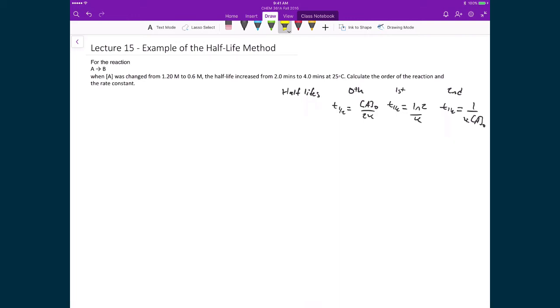The second example we're going to cover is using the half-life method to determine the order of a reaction. In this case, a reaction is just a simple reactant A that turns to product B. We change the concentration of A from 1.2 to 0.6 molar, and that increased the half-life from 2 minutes to 4 minutes at 25 degrees Celsius. So the question is, what is the order of the reaction?